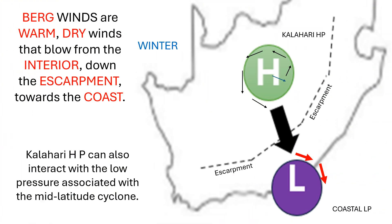The interior of South Africa is located on a high-lying plateau. This plateau is separated from the coastal regions by a range of mountains that run parallel to the coast. These mountains collectively are called the escarpment.